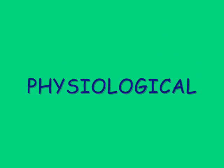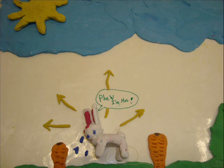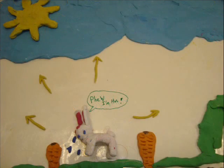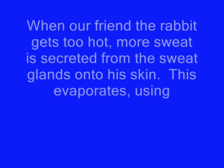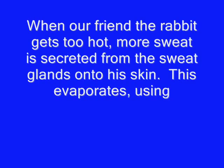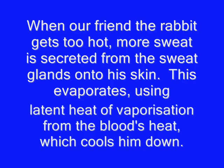Physiological! When our friend the rabbit gets too hot, more sweat is secreted from the sweat glands onto his skin. This evaporates using latent heat of vaporisation from the blood's heat, which cools him down.